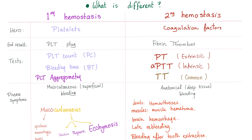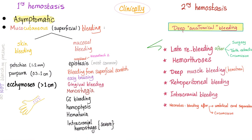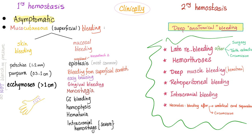Which hemostasis is affected in liver disease? Both. But most importantly, secondary hemostasis. Expect deep bleeding: hemarthrosis, muscle hematoma, brain hemorrhage, splinter hemorrhage, GI bleeding, and more — all of this can happen in liver disease. Don't forget that thrombocytopenia can also happen, leading to superficial bleeding.